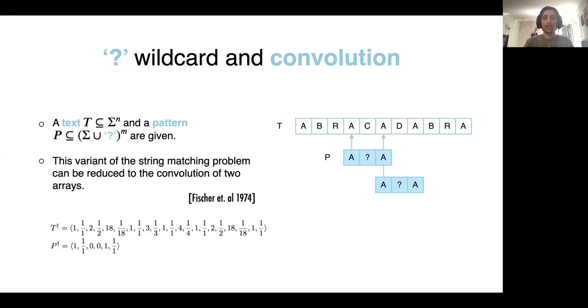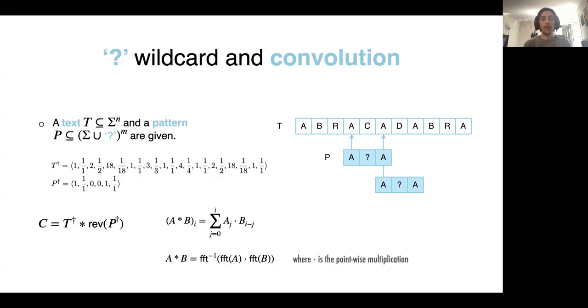They replace each character in text and pattern with two other elements where one of them is MP of that character and the other one is inverse. For example, for string T and P here, we can convert them into these two arrays. And as you can see, the question mark is replaced with two zeros.